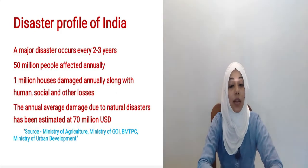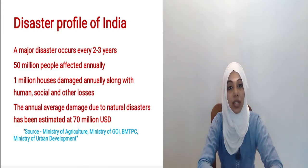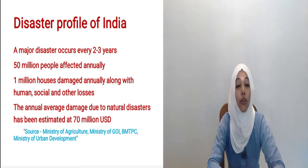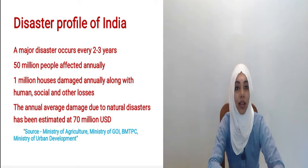A major disaster occurs over every two to three years. Around 1 million people are affected. The annual average damage due to natural disasters is estimated as 70 million US dollars.